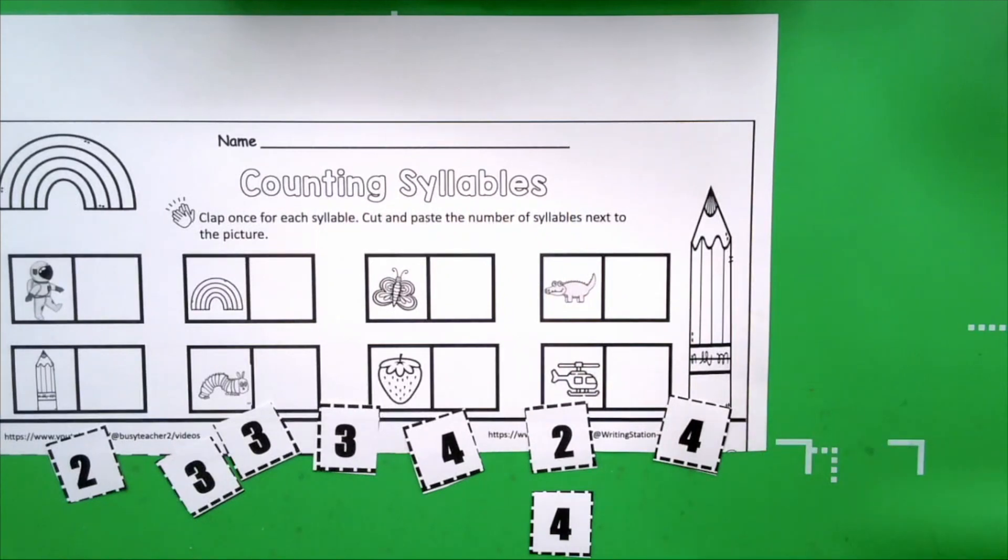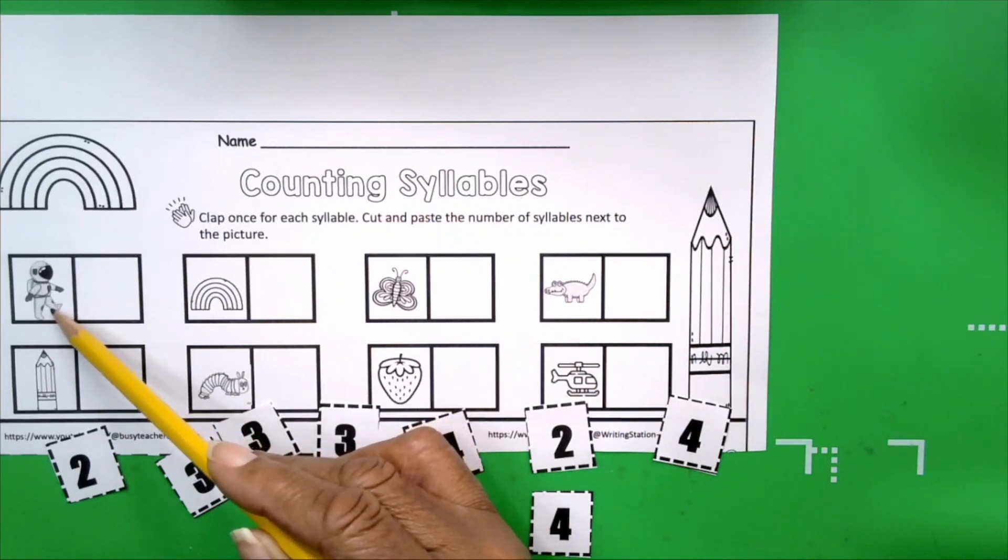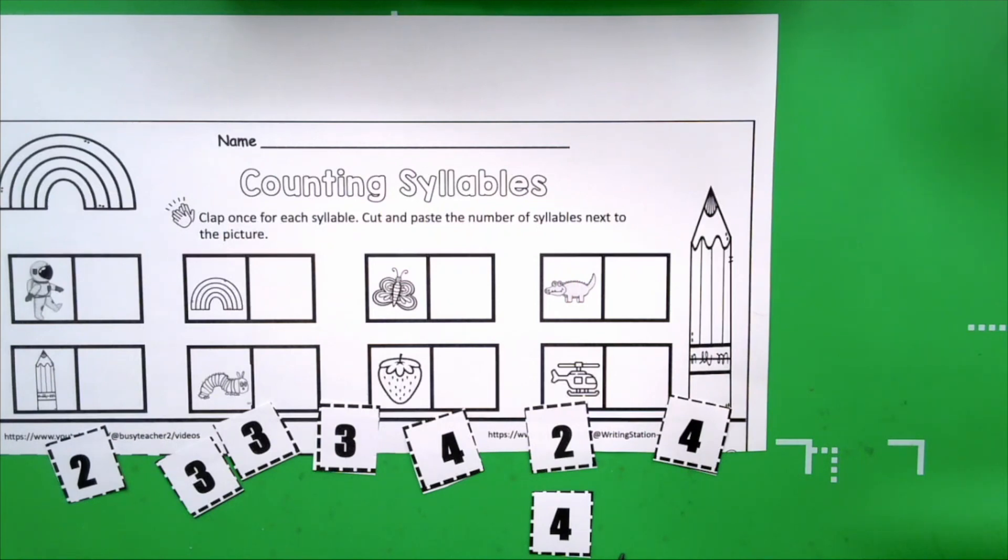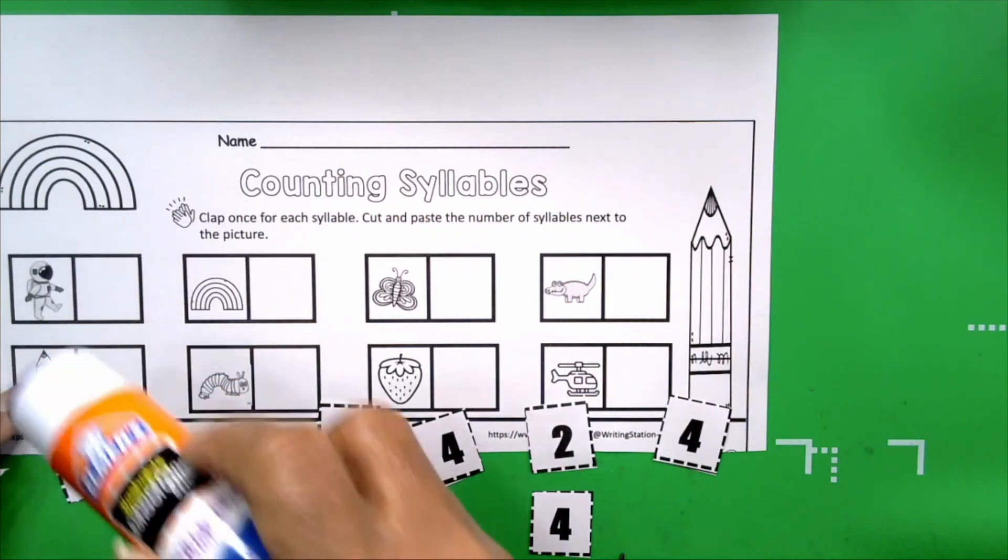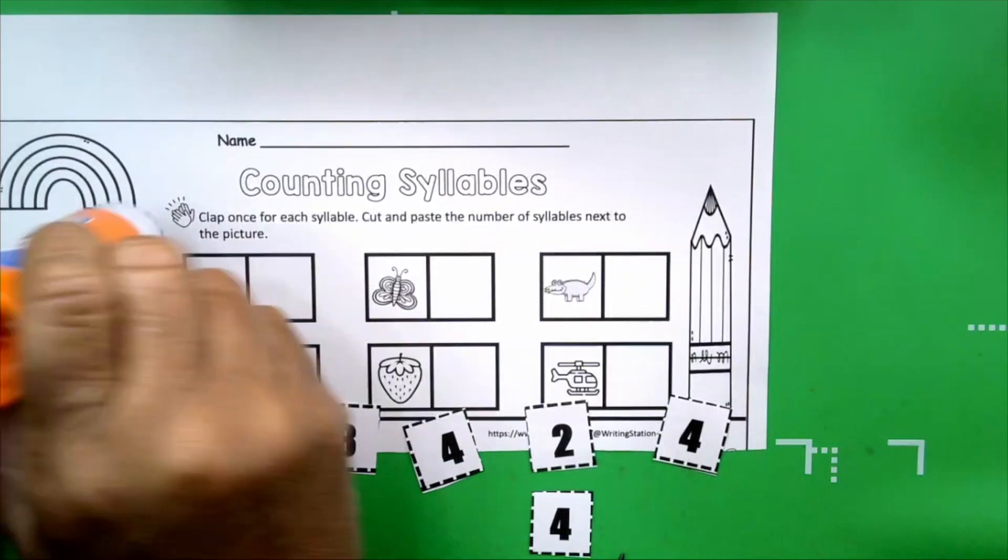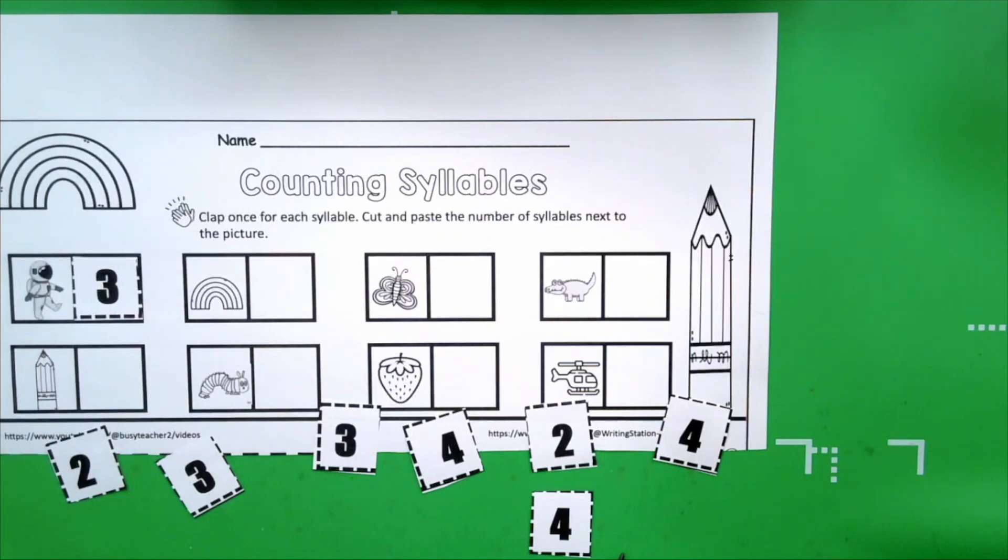Okay, let's take a look at the first picture. And the word is, what is the word for this picture? Astronaut. Okay, get your hands ready. Astronaut. How many claps did you hear? Three. And how many syllables are in the word astronaut? Three. So let's find our number three. And let's give our glue stick a swirl. And we're going to paste the number three next to the astronaut. This tells us that the word astronaut has three syllables.